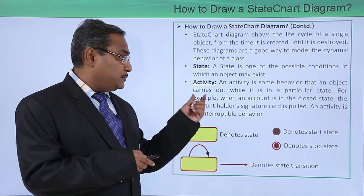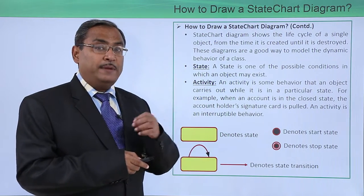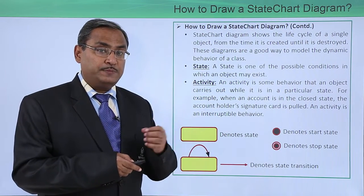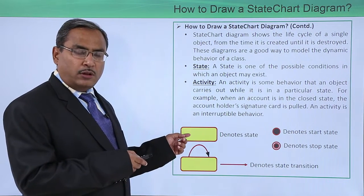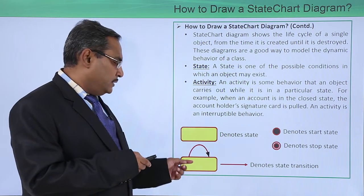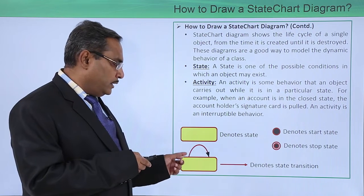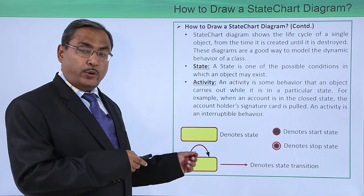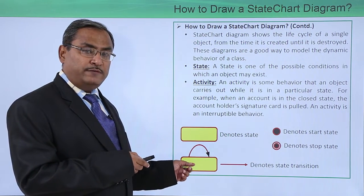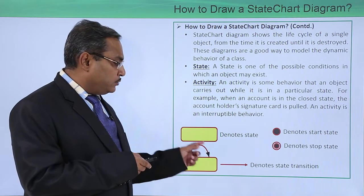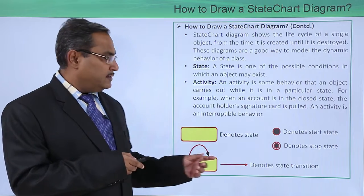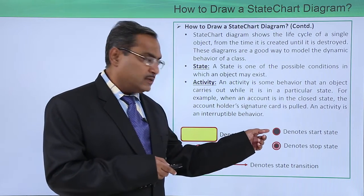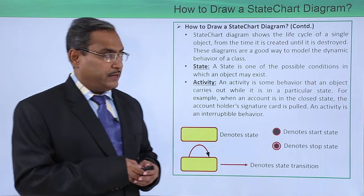This is the symbol which we denote the state. This is the symbol where we are denoting the state transition. Whenever this transition is originating from one state and terminating to the same state, then it can also be called as reflexive transition. This is the start state and this denotes the stop state.